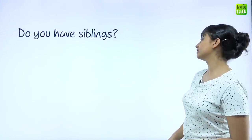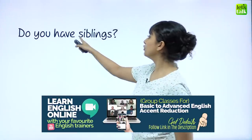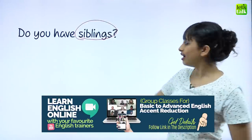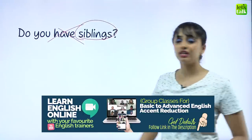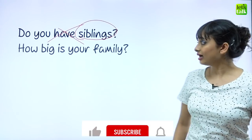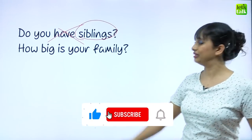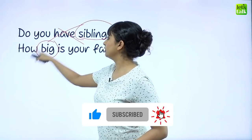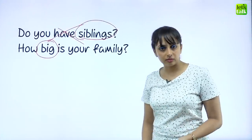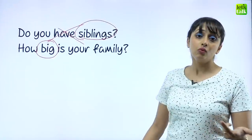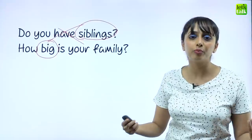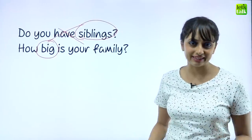Let's take a look at the next question: do you have siblings? You want to talk and know about the other person's family. However, it's either yes or no — you're not getting any great information, are you? Now, how about: how big is your family? You'll get answers which are more open, like: I have a nuclear family, I have a joint family, or it's just the two of us and our two children. Such answers are more open and conversation friendly.